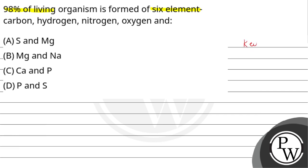So firstly, see about the key concept of this question. Here we are going to see the 6 major elements in living organisms. 98% of living organisms is formed by 6 elements.